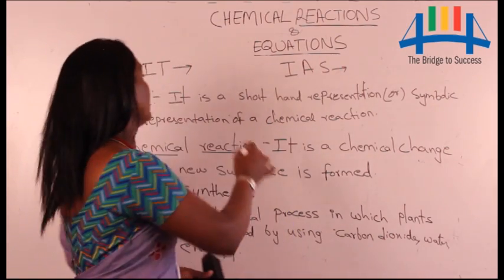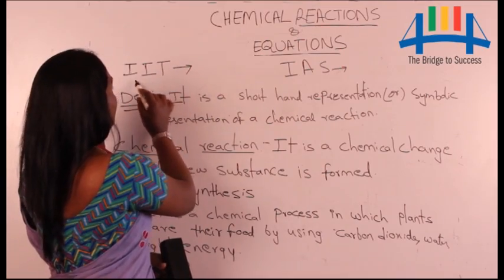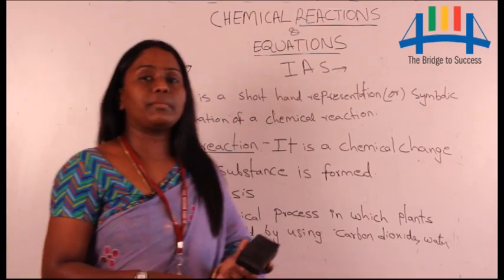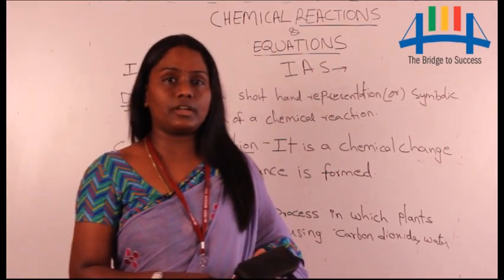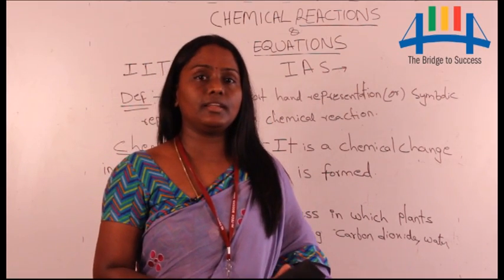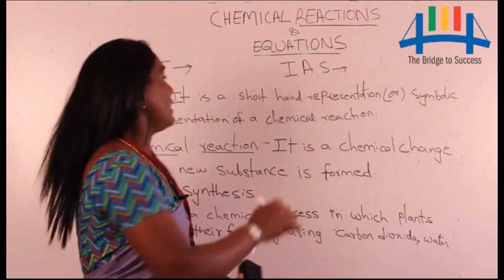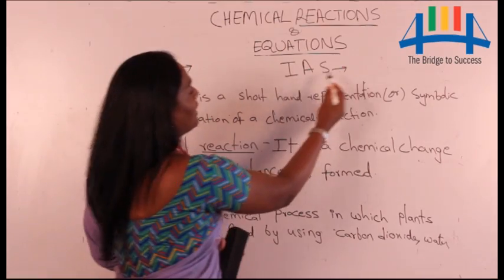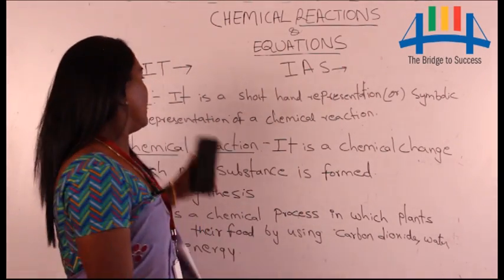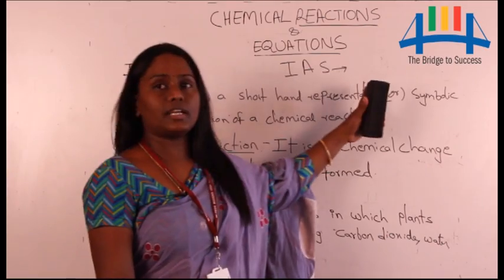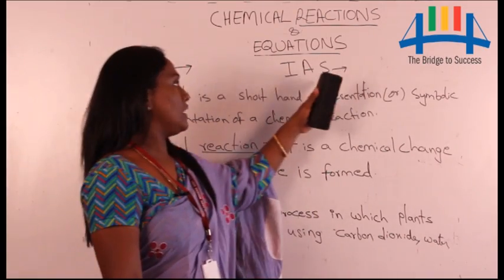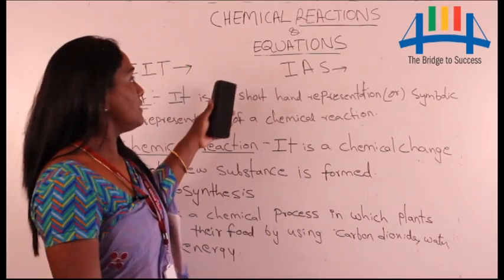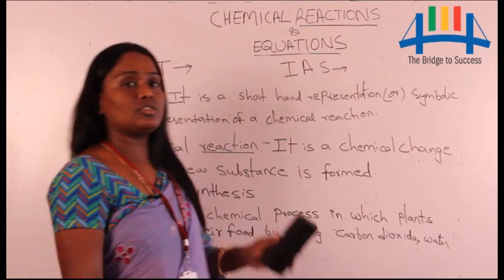For example, IAS or IIT. What is meant by IIT? IIT means Indian Institute of Technology and IAS means Indian Administrative Service. Instead of writing a full sentence we write IIT or IAS, and not only me — you are also using the same terms. So like this, in chemistry also we have a shorthand representation to write a chemical reaction.